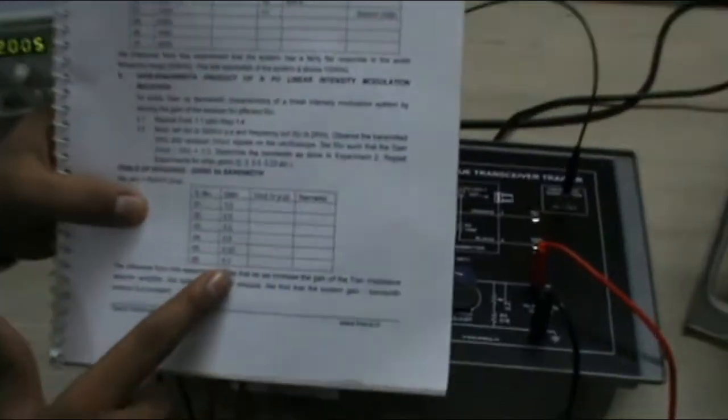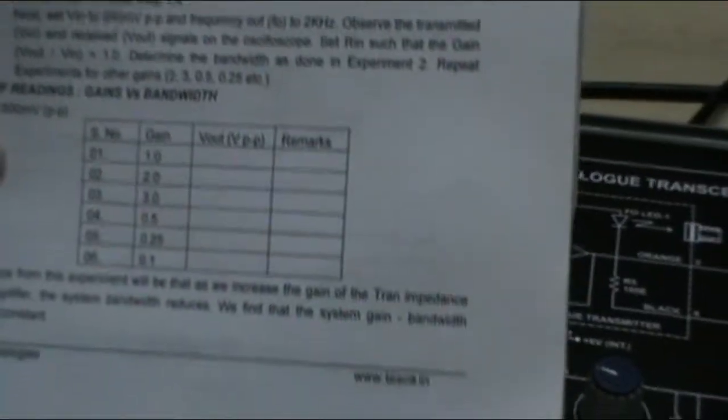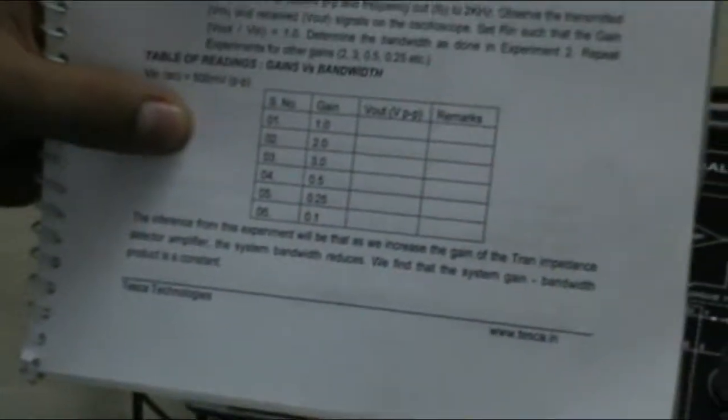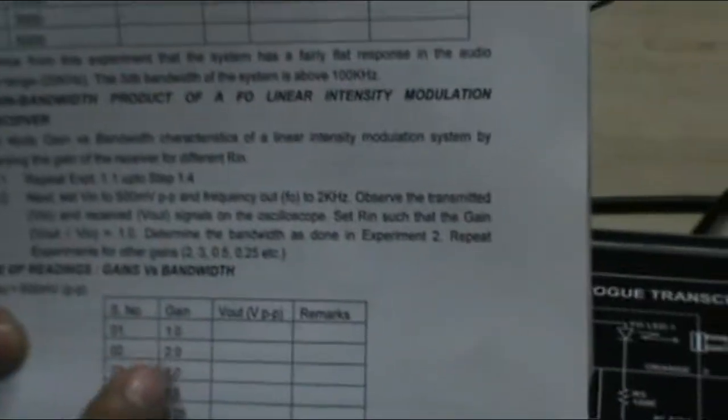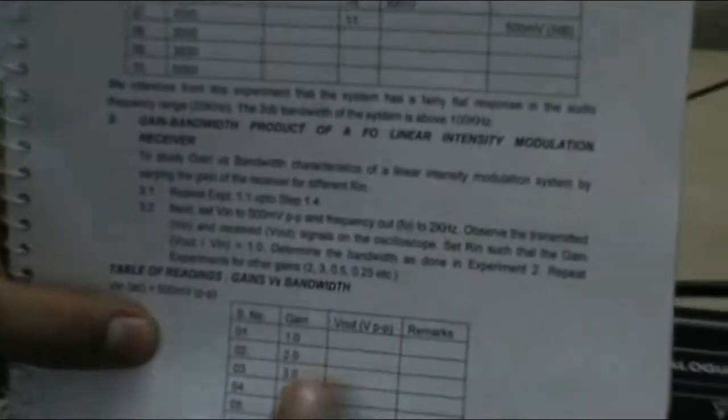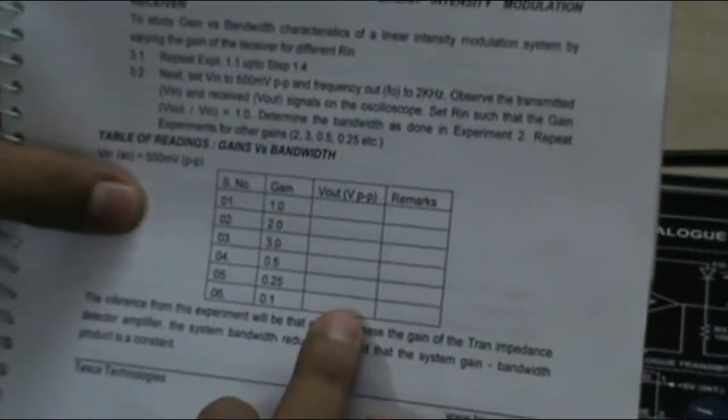Similarly, as according to our tables seen, the gain is 1, 2, 3, 0.5, 0.25, 0.1. Take the different readings by giving the VIN and varying the V output according to the gain. To make the gain 2, make the V output double of VIN. We will get the gain 2 and measure the output voltage peak to peak. That's it in these experiments.